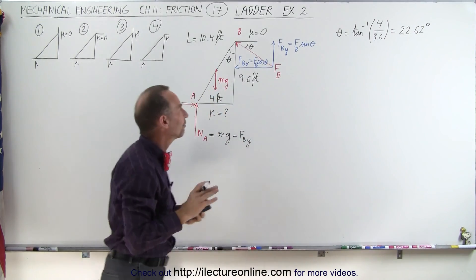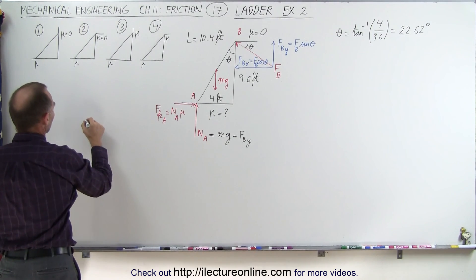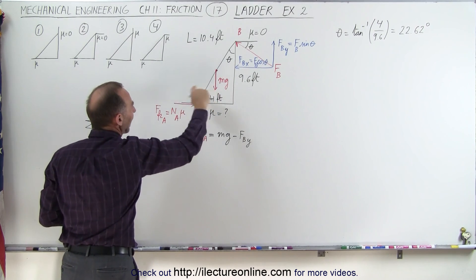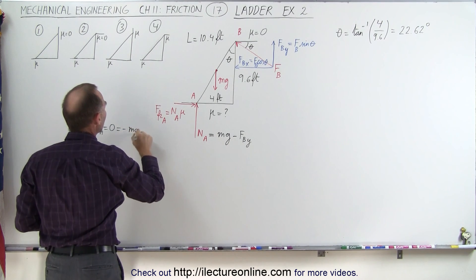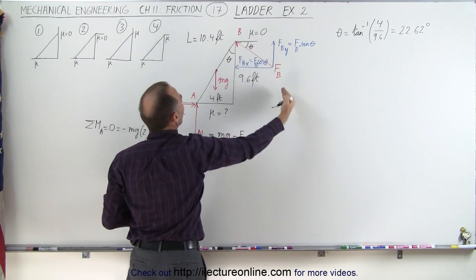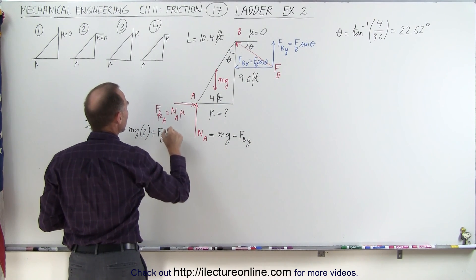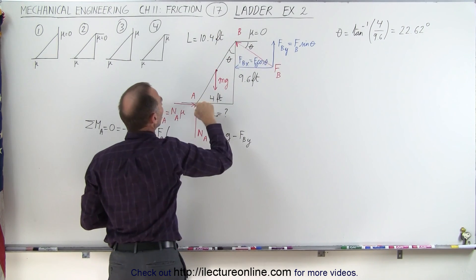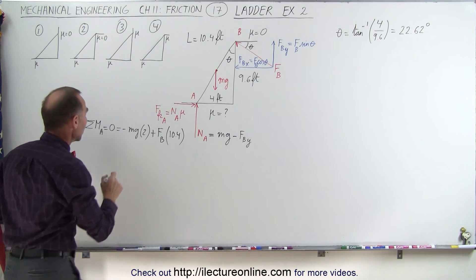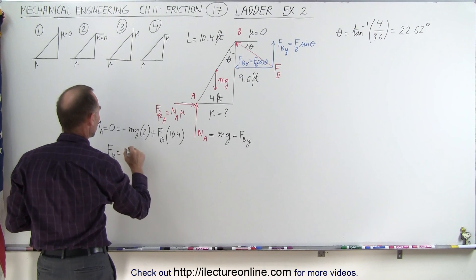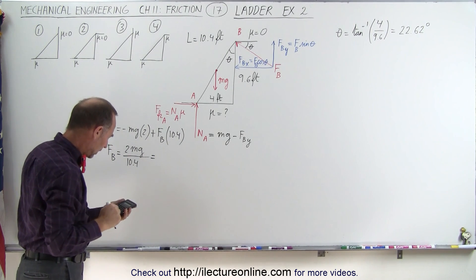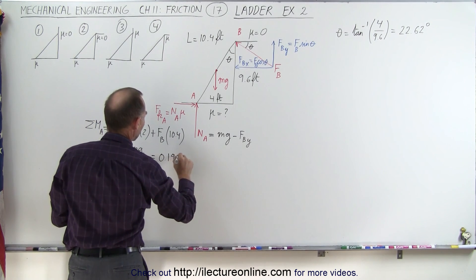Next, we need to find the value of that force F by taking the moment about A. The sum of all moments about A must equal zero. We take mg, the weight of the ladder, which causes a clockwise (negative) moment: minus mg times the perpendicular distance of 2 feet. Then force B pushing back gives plus force at B times the perpendicular distance, which is the length of the ladder, 10.4 feet. From this, force at B equals 2mg divided by 10.4, giving 0.192mg.